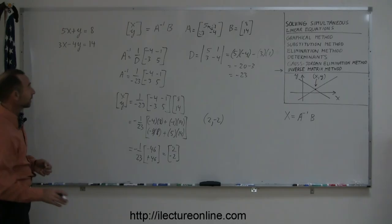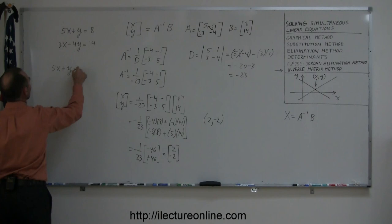And just to make sure we did this correctly, let's plug the values into our two equations. So we have 5x plus y equals 8, plug in a 2 and a negative 2, so 5 times 2 plus a negative 2, is that indeed equal to 8? 10 minus 2, yes indeed, that is 8.